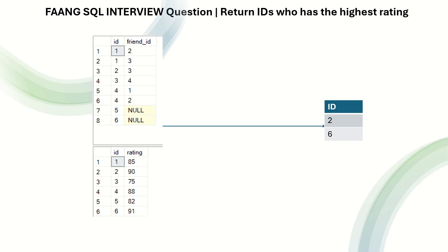Greetings everyone, welcome back to my channel Data Sculptor. Today we are going to see another interesting SQL question — this is a FAANG-level interview question. The question involves two tables called friends and ratings.